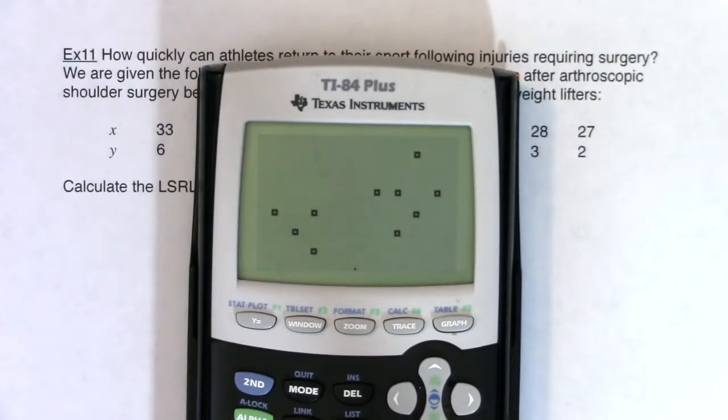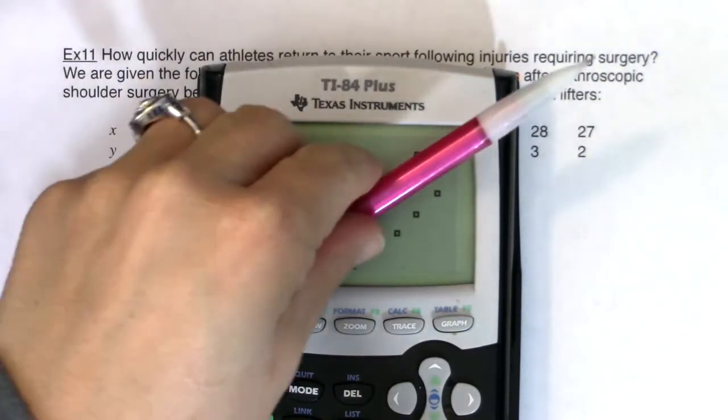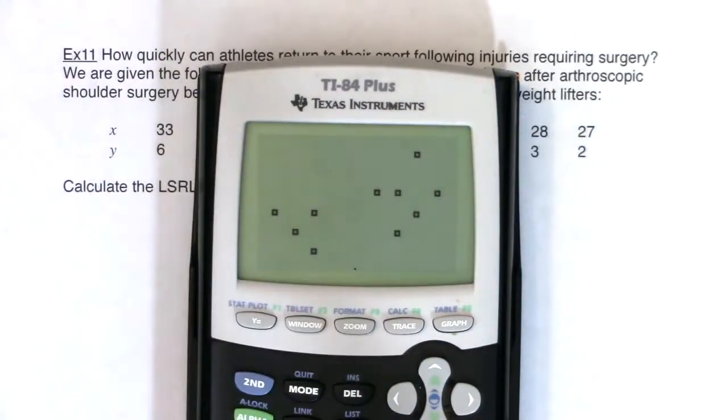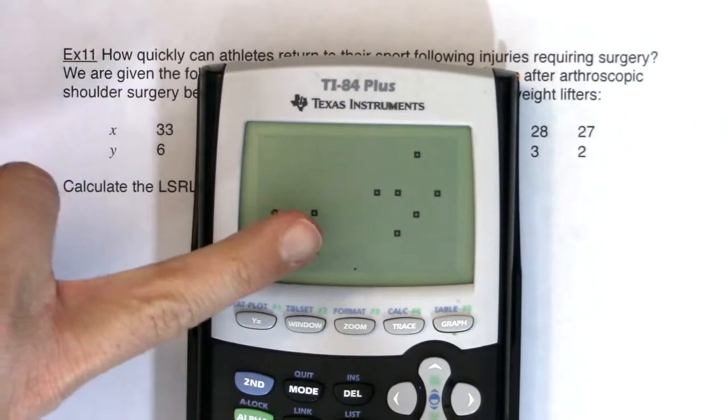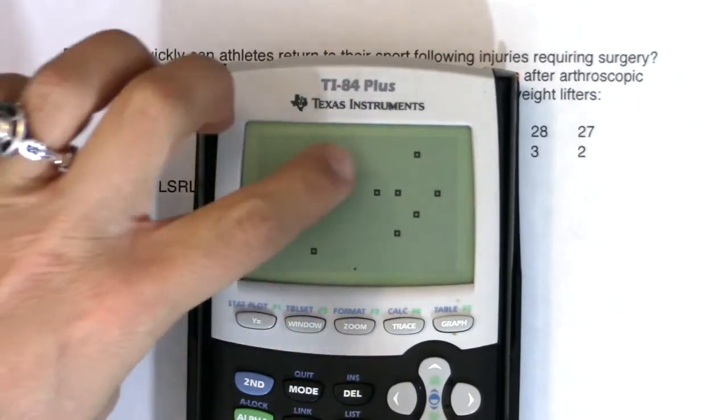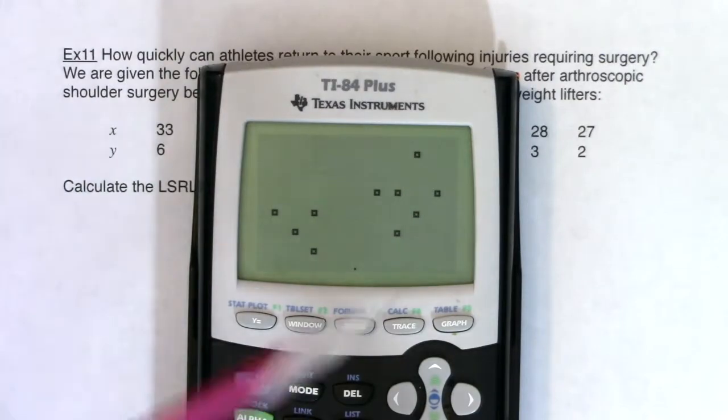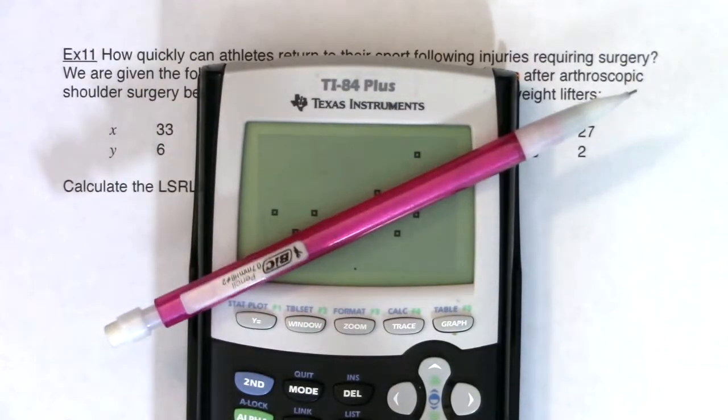So let's see what this plot looks like. Let me hit zoom nine. I can kind of see a linear relationship, a little bit of one, a little positive. I would say that looks moderate, moderate to weak, if I'm just taking a look at it, because it doesn't look like a solid line. But overall, I want to get that LSRL that way.